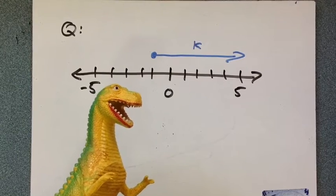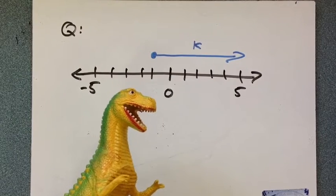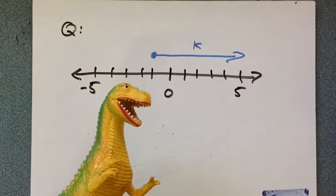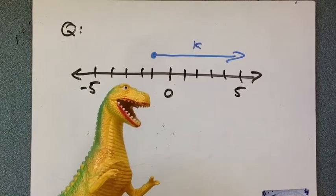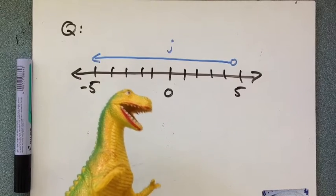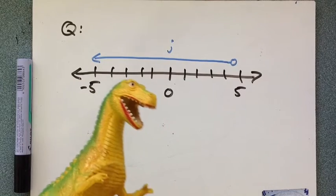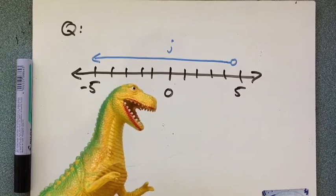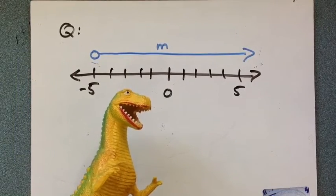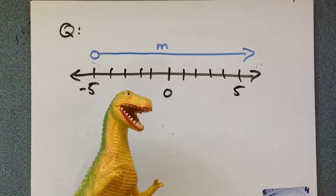Here's your first example question. K can be expressed as what inequality? Here's the next question. J could be expressed as what inequality? M can be represented by what expression?